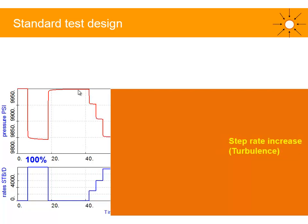Then we may have a step rate increase test or flow-after-flow test to measure turbulence for a gas or gas condensate well, or the non-Darcy skin factor. We don't believe in fancy deliverability tests — these were old-style tests, and with a PBU analysis we get everything we need: the permeability, the different skin elements, etc. We don't need any deliverability tests.